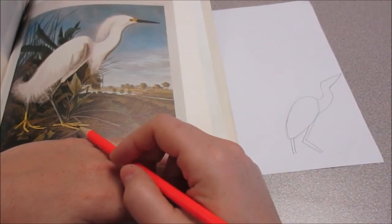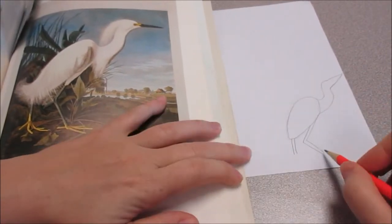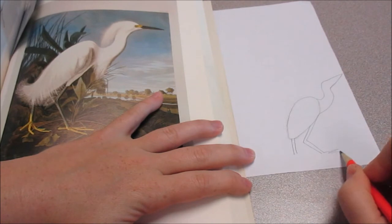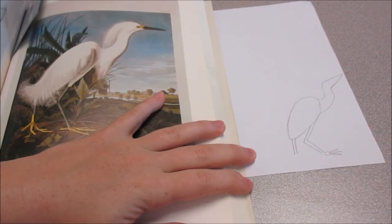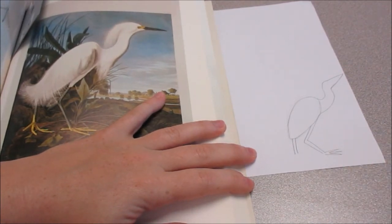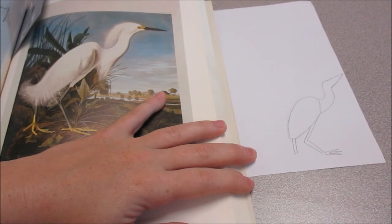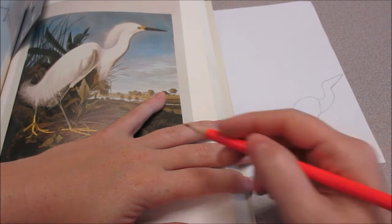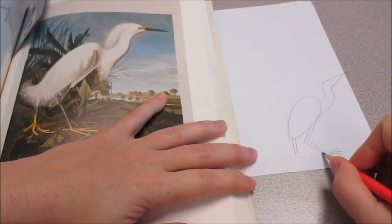And then the toes. There are going to be three toes spread out. So we can just do one, two, three. And then one going back to keep his balance.